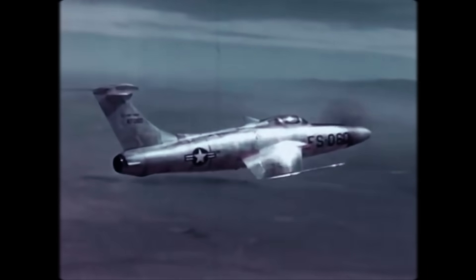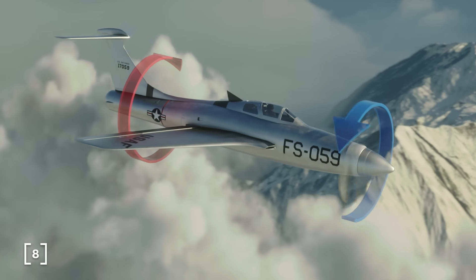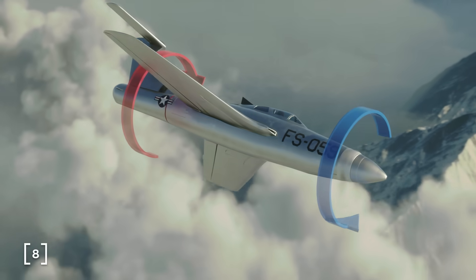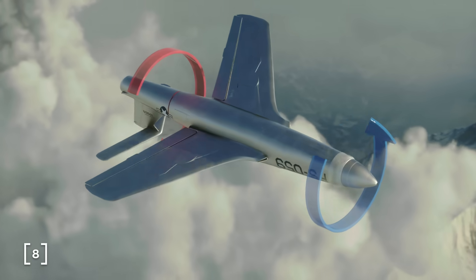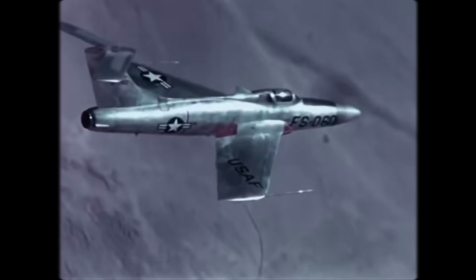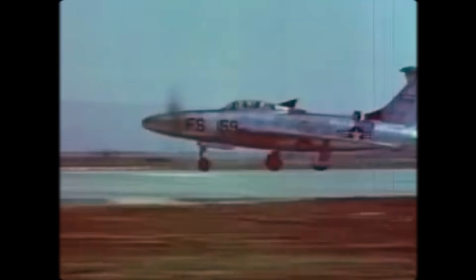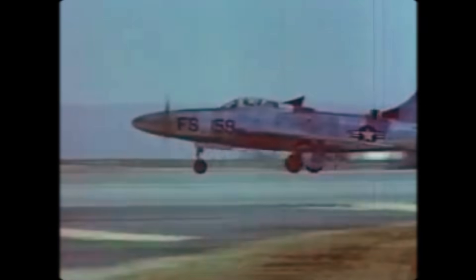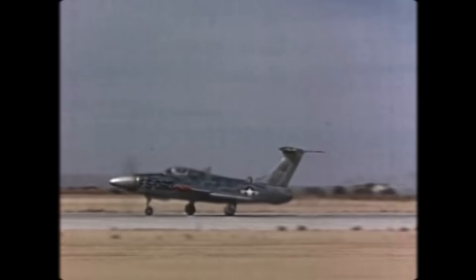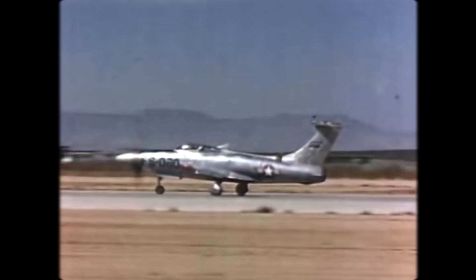When the propeller spins clockwise, it creates an opposite reaction force that could cause the actual plane body to spin anticlockwise. With the extremely high rotation speeds of this propeller, this effect was particularly pronounced, and became even worse as the plane picked up speed. According to Hank Baird, a test pilot who flew 12 flights with the Thunderscreech, the propeller governor would malfunction at certain speeds.